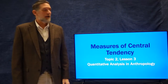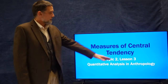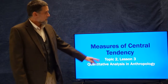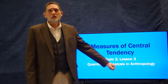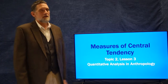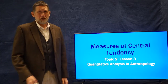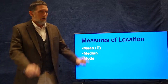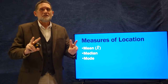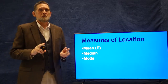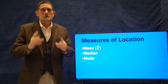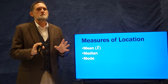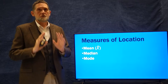Hi, welcome back to Quantitative Analysis and Anthropology. I'm Professor Peregrine. Today we're on topic two, lesson three. We're going to talk about measures of central tendency — three basic key measures of what are called location or central location. These are absolutely basic to statistics.